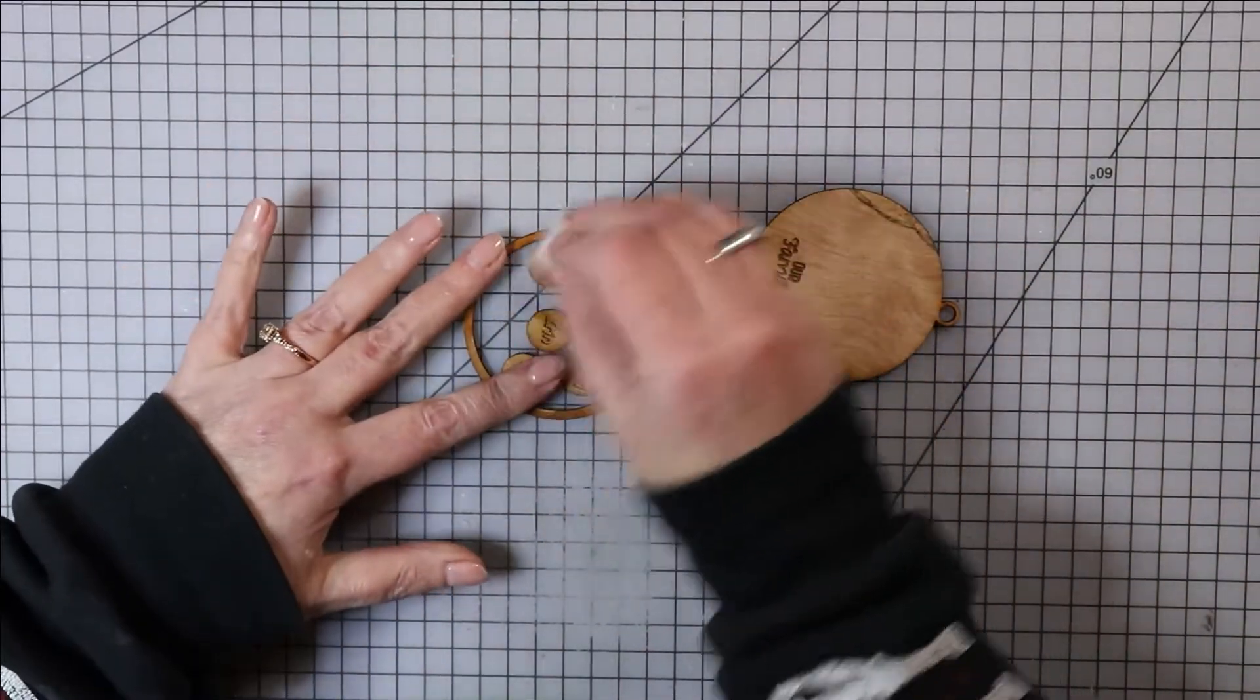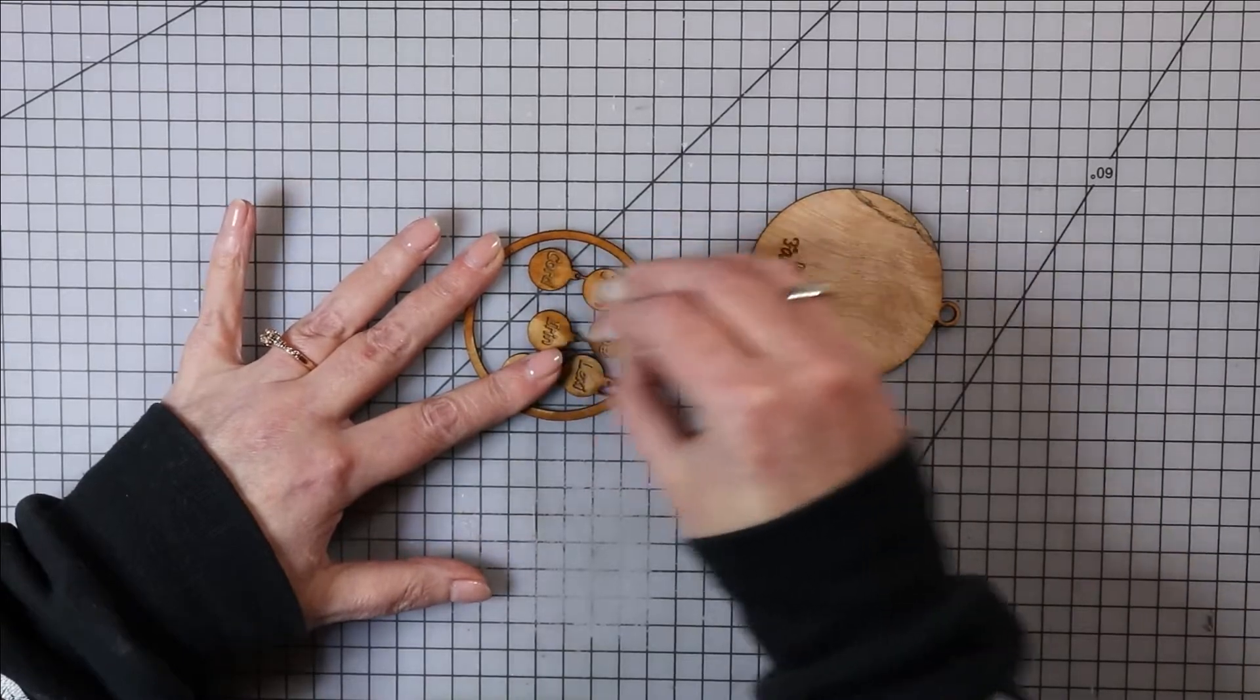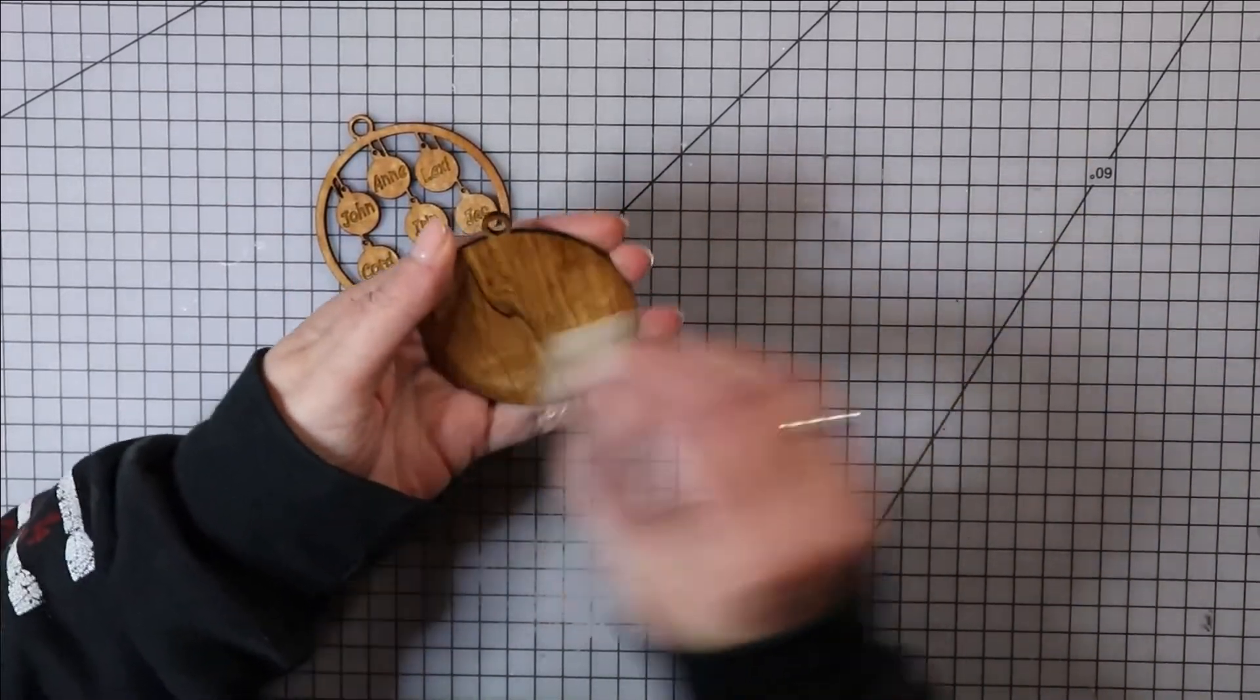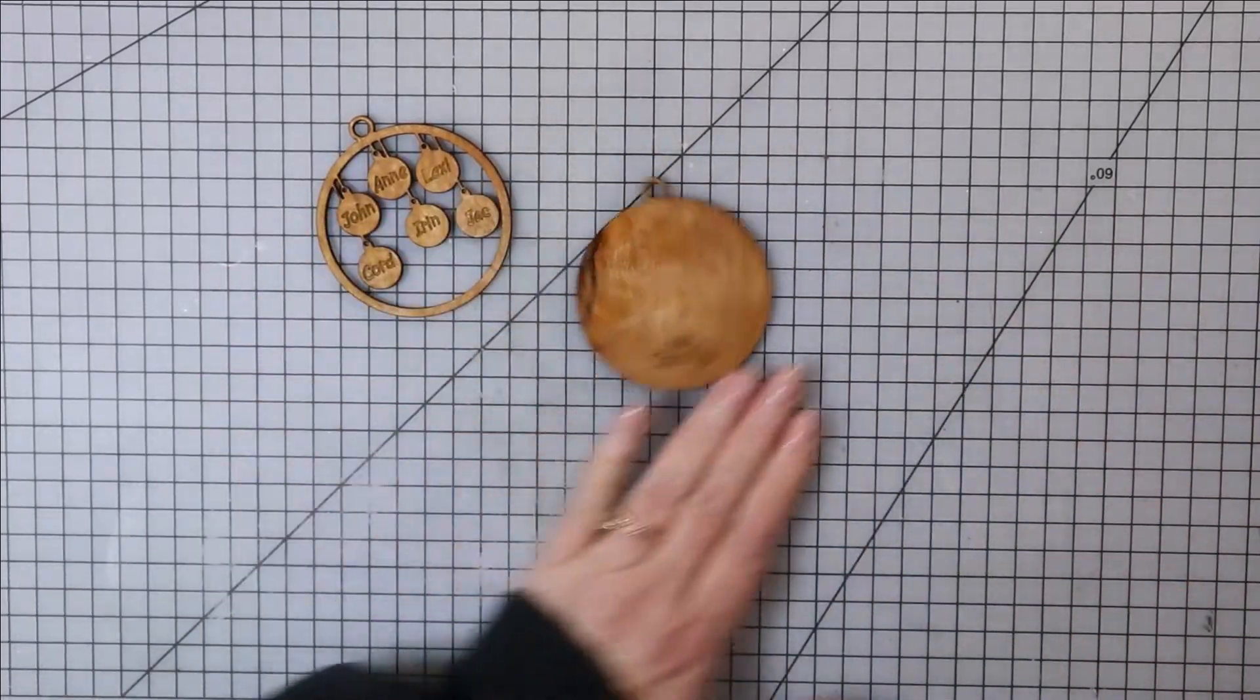Be careful when you're prepping this ornament though, because those little strings holding the ornament pieces on can be quite delicate. If you scrub a little too hard you might break one off, but if that happens just glue it back together.